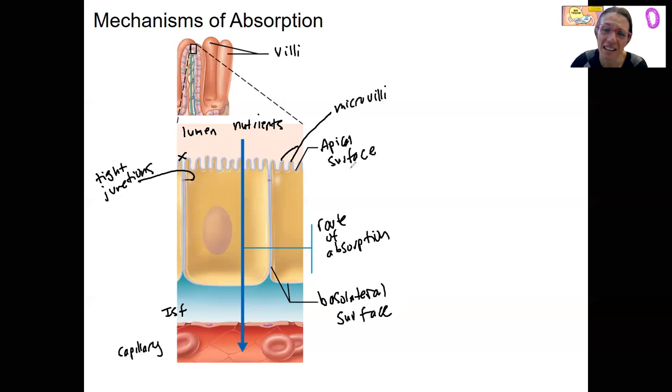This is our basal or basolateral surface, also called membrane. So this surface here is a membrane, and actually I want you to think of it as a membrane because we're going to have to think about going through that membrane.